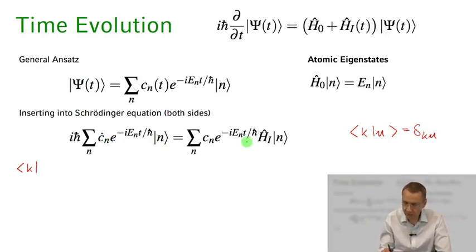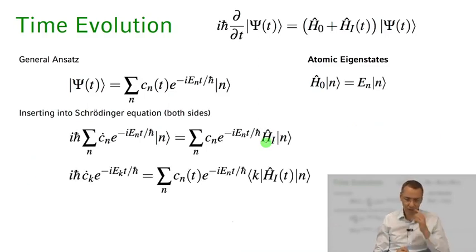On the right hand side I can't just pull this kth vector through to form directly the scalar product because I have this operator HI in between, so I just have to keep the sum on the right hand side. I project out the kth coefficient by multiplying with the bra vector k from the left to these equations.